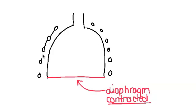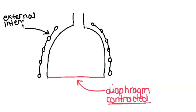Please be aware that there are external and internal intercostal muscles. In inspiration, the external intercostal muscles are going to contract and these are going to move the ribs up and out.